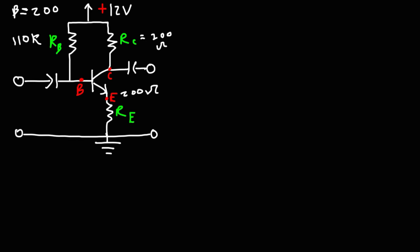The first thing we need to do is determine the base current in this circuit. We need to come up with a formula. According to Kirchhoff's voltage law, the sum of the voltages in a closed circuit will add up to zero. We're going to start from the collector supply voltage VCC and work our way to the ground, traveling through RB with a voltage drop of VRB.